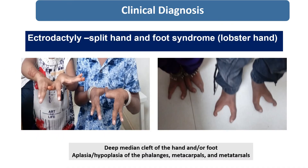The diagnosis will be split hand and foot syndrome, and the name of this sign is ectrodactyly. Both the siblings are having ectrodactyly, and the name of this syndrome is split hand and foot syndrome, also known as lobster hand.